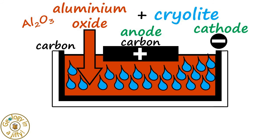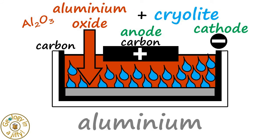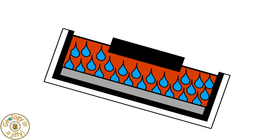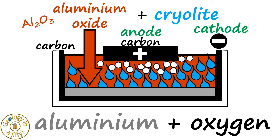That's amazing! So cryolite is added to our aluminium oxide, with aluminium then attracted to and extracted at the cathode. This is then separated by pouring or tapping the liquid metal off, and the oxygen forms at the anode.